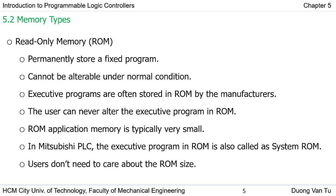The first type is Read-Only Memory, which we call ROM. This type of memory stores a fixed program permanently and cannot be updated, changed, or erased. Executive programs are often stored in ROM by the manufacturer, and the user can never enter the executive program in ROM. If you buy a PLC, you can change the control program, but you cannot change the program in ROM.